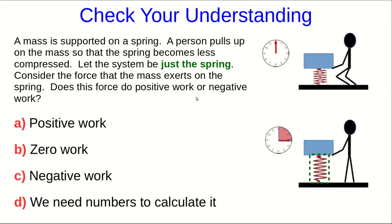Let's check that you know how to determine whether work is positive or negative. Here we have a mass sitting on a spring, and a person pulls up on the mass so that the spring becomes less compressed. Let our system be just the spring. Remember, there is a force that the spring exerts upward on the mass, and its interaction pair partner is a contact force that acts downward — the force that the mass exerts on the spring. Does that contact force do positive or negative work on the spring?